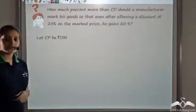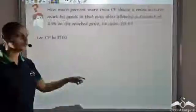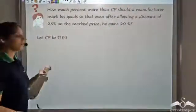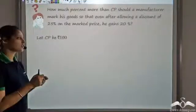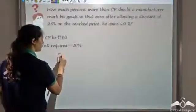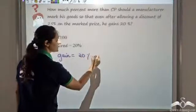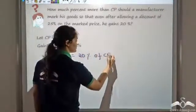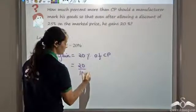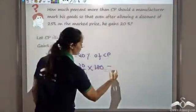Let us say that the cost price is 100 rupees. So CP is 100 rupees. We know that the gain he wants is 20%, and gain is always considered on the cost price. So the gain is 20% of the cost price, which is 20% of 100, which gives us 20.